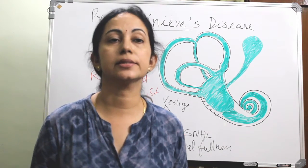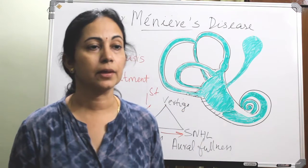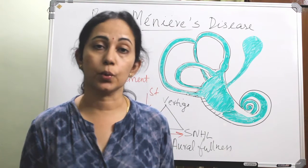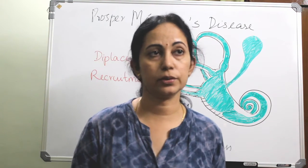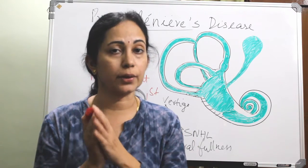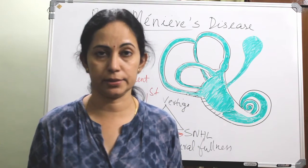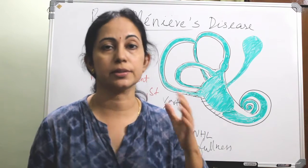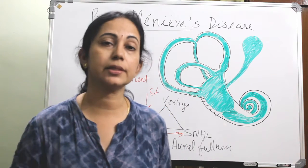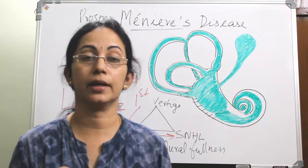Regarding tinnitus: it is usually non-pulsatile, may be continuous or intermittent, and is roaring or hissing in character. Before an acute attack, the patient will typically feel tinnitus first — all symptoms usually start with tinnitus, followed by vertigo and hearing loss. This tinnitus will go into complete remission between attacks.